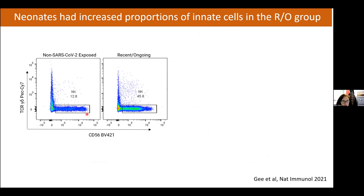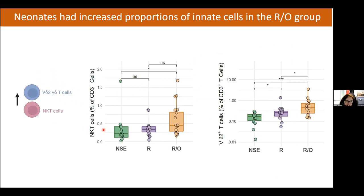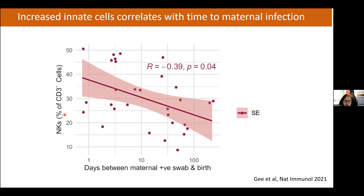We did see changes in innate cells in babies born to mothers who were COVID-positive at the time of birth. NK cells increased substantially — from about 30% of non-CD3 cells in non-exposed infants to much higher levels in babies born to recently infected mothers. In addition to NK cells, NKT cells and Vγ2Vδ2 gamma-delta T cells also appeared elevated. NK cell levels correlated with maternal swab date, confirming a neonatal innate immune response to current maternal infection.